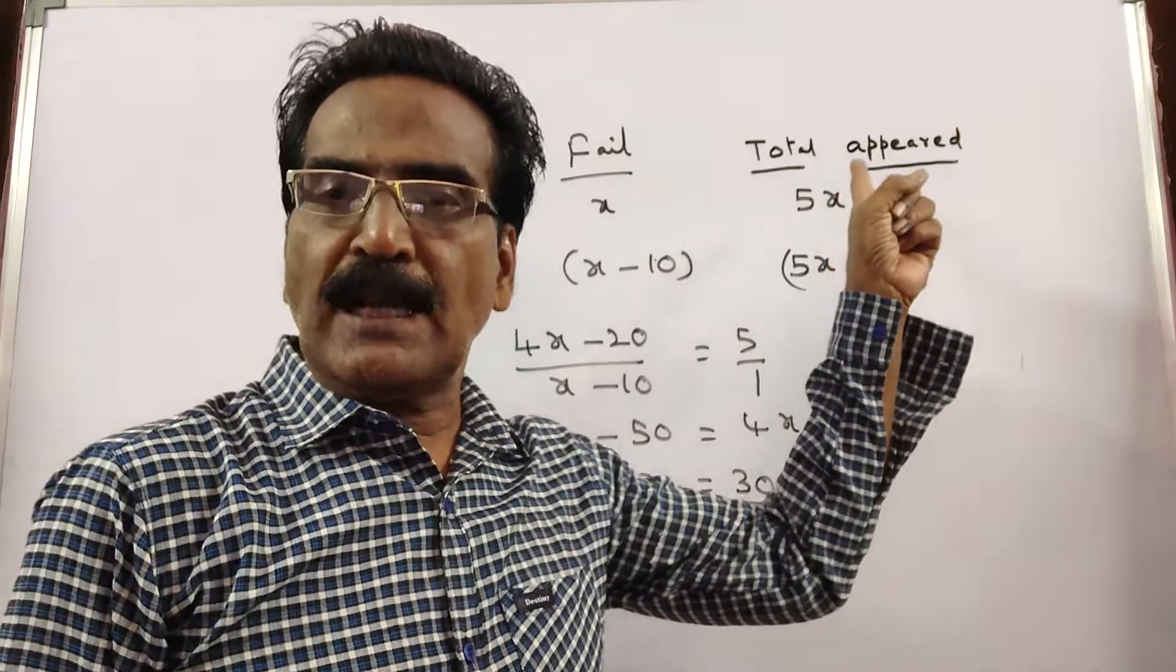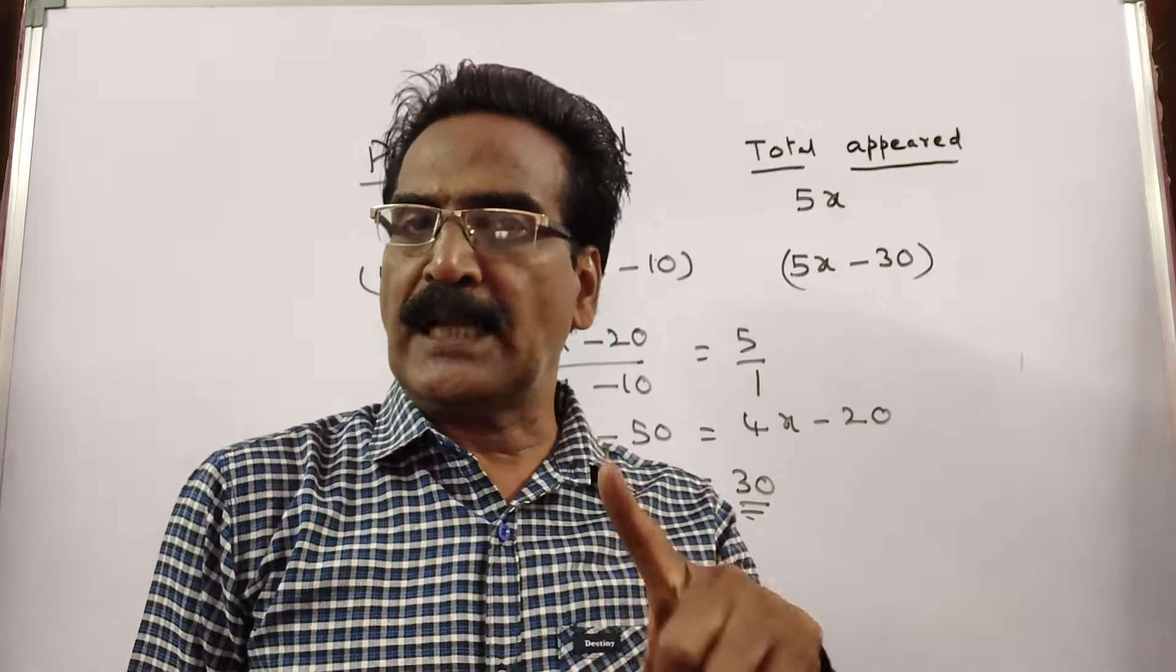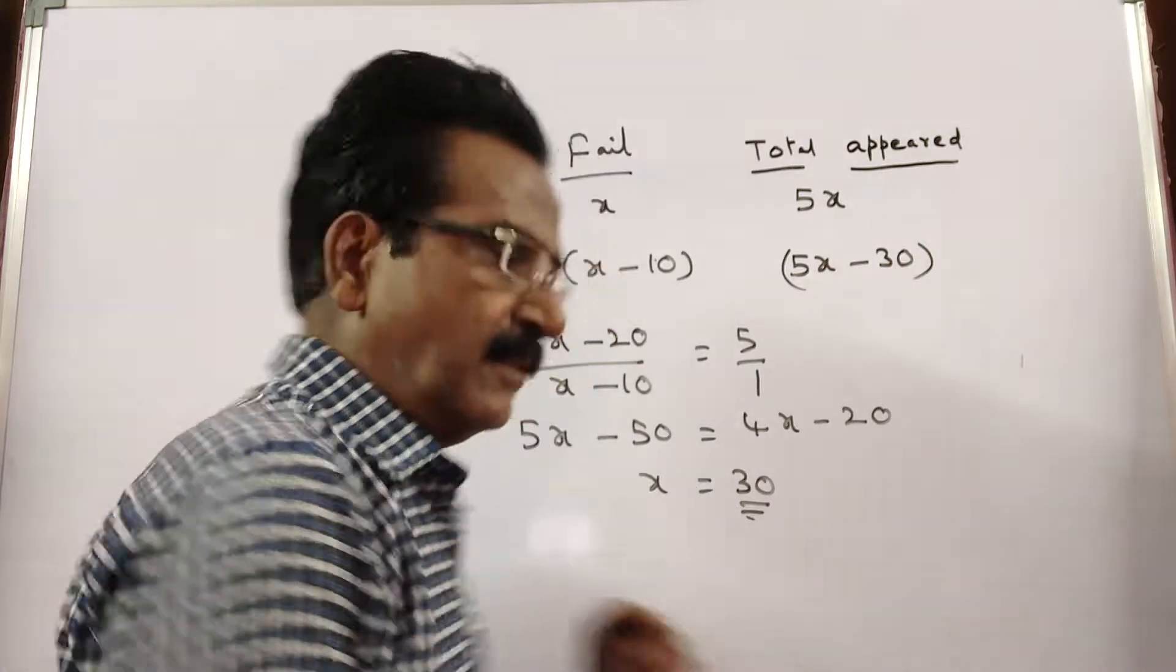That implies total appeared is 5x. So 5 into 30, 150 total number appeared. Okay friends, thank you.